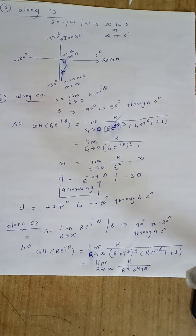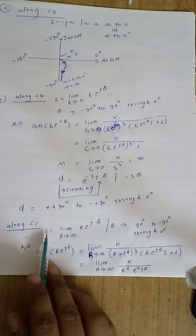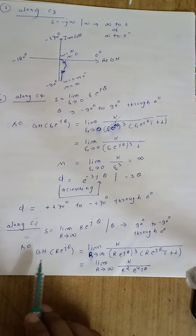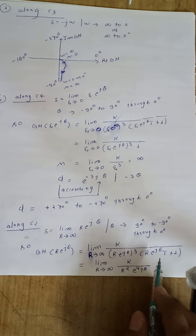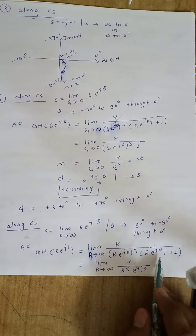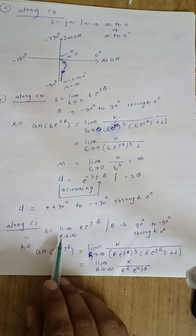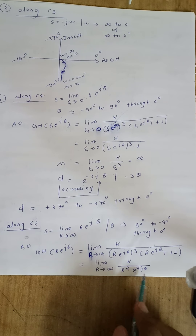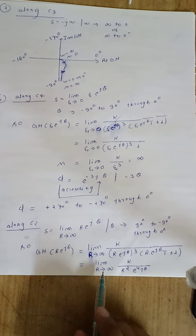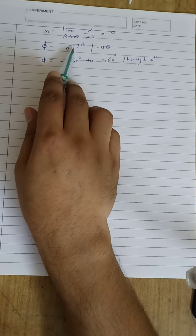Let us put the value of s in the given open loop function. For the second term present in the denominator polynomial, we can ignore 1 as compared to R times e to the j-theta because here R goes to infinity. So we have the limit as R tends to infinity of K over R squared times e to the 4j-theta. The magnitude is the limit as R tends to infinity of K over R squared, which gives magnitude zero.